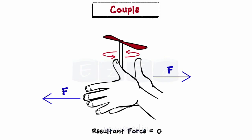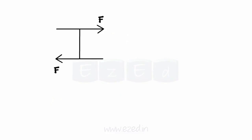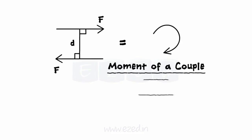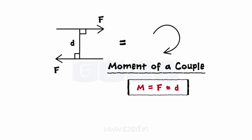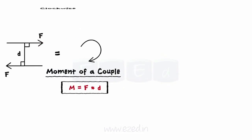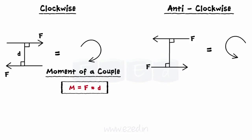The effect of a couple is to rotate the body on which it acts. The figure shows two parallel forces of same magnitude F, separated by perpendicular distance D, together forming a couple. Moment of a couple can be calculated as the product of the magnitude of one of the forces and the distance between them. Rotation of a couple can be clockwise or anticlockwise. Units of couple are newton meters.